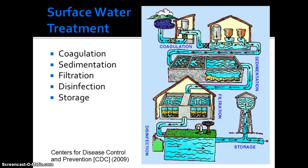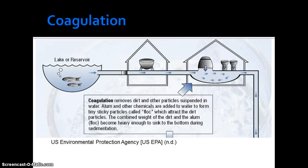As the U.S. Environmental Protection Agency, U.S. EPA, notes, water treatment may vary by community depending on the quality of the water entering the plant. Groundwater typically requires less treatment than surface water from lakes, rivers, and streams. The first step shown is coagulation, though there may be pretreatment screening to remove any large debris that would impede water treatment. Coagulation removes dirt and other particles suspended in water. Alum and other chemicals are added to water to form tiny, sticky particles called floc, which attract the dirt particles. The combined weight of the dirt and the alum floc becomes heavy enough to sink to the bottom during sedimentation. (U.S. EPA, no date.)